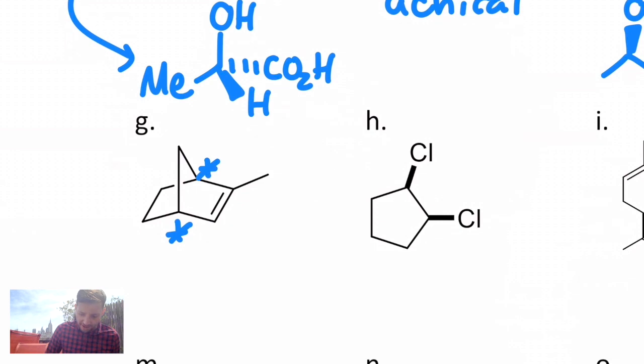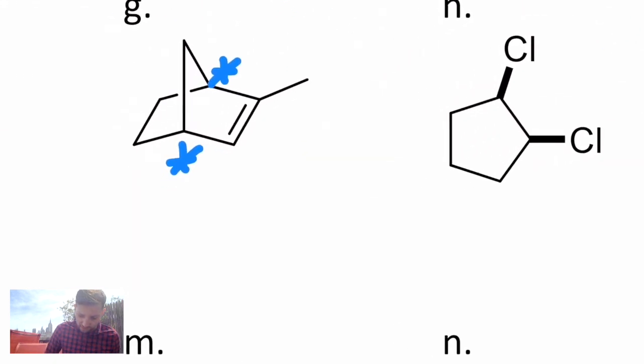If I had to draw an enantiomer of this, one way would be to draw it very similarly, but I could just move that methyl down to the lower right. That is actually the mirror image of the original compound, and it's not identical.